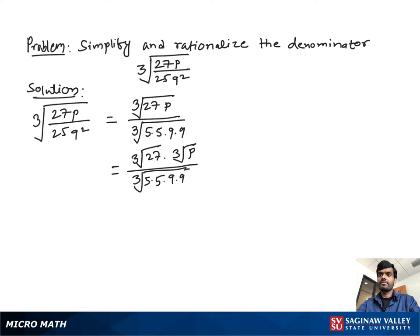To make the denominator a perfect cube root, we have to have three factors of five and three factors of q. But we have only two factors of five and two factors of q. We still need one more factor of five and q.